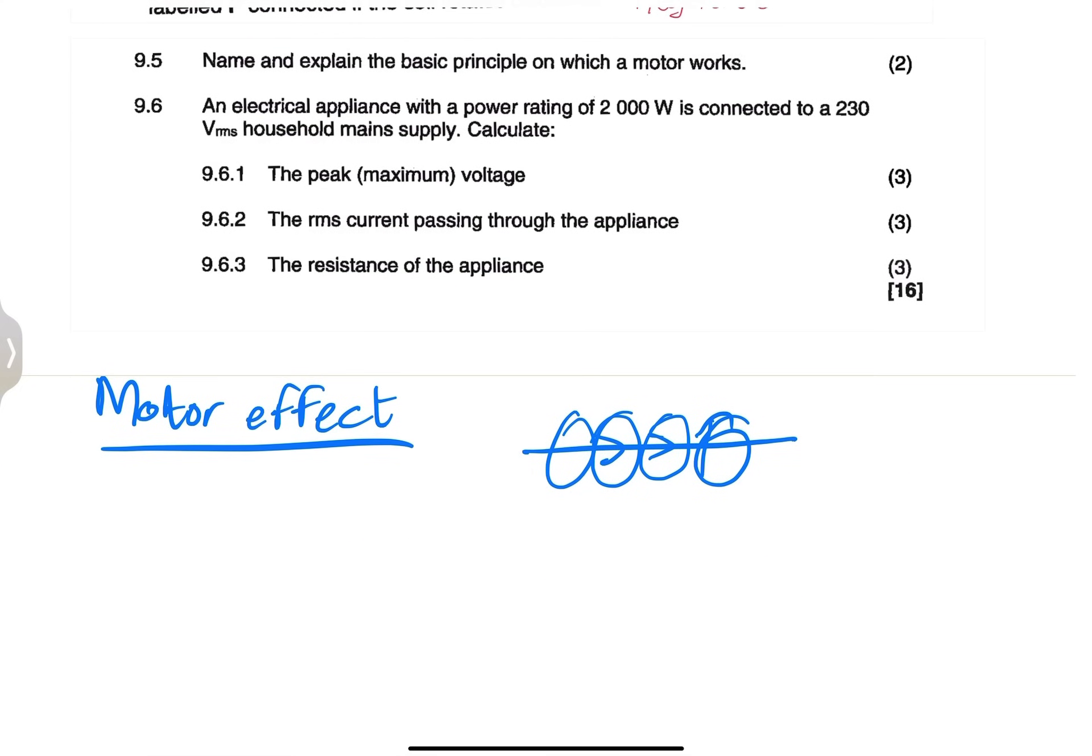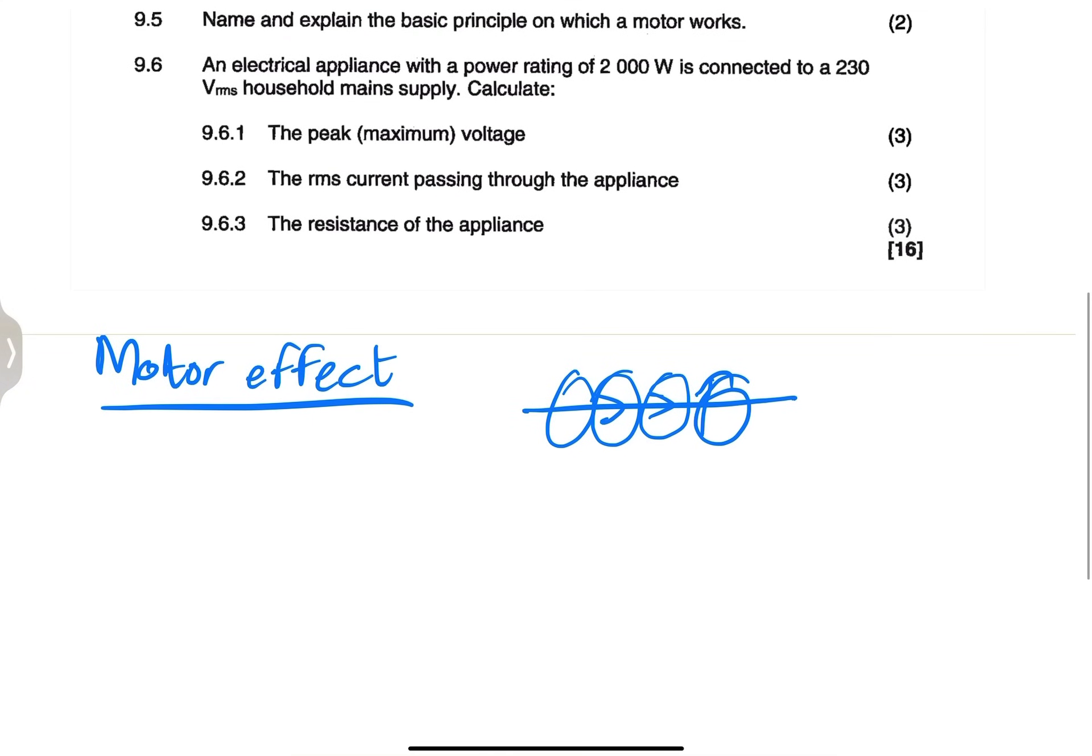Now, the next question, they say an electrical appliance with a power rating of 2000 watts. Now, please, I want you to remember the moment you are given a power rating in this case, just keep in mind that's going to be your average power. So the average power for this motor is 2000 watts. They say it's connected to 230. So they give us V_RMS as 230 volts. They say household main supply.